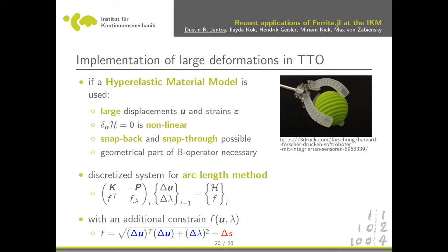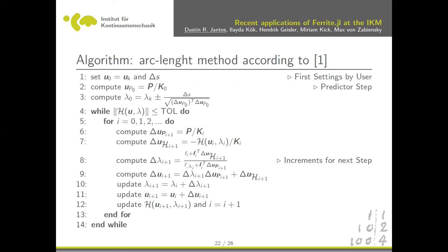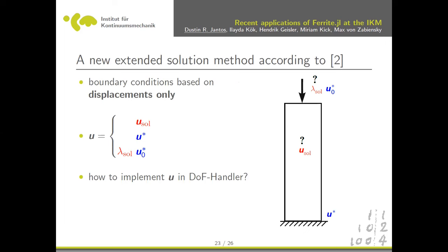The arc length method is basically: when you try to follow the displacement-force curve, you find a solution close to your last load point. There's an additional side constraint — you don't know what force to apply — so you solve this additional side equation. You can rewrite the equation system to make it more efficient. We've written down the pseudo code, we're currently implementing it, and the theory is described in literature — it's nothing new in theory, but new for us in Ferrite.